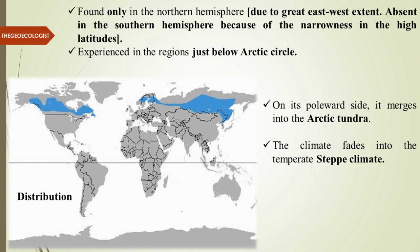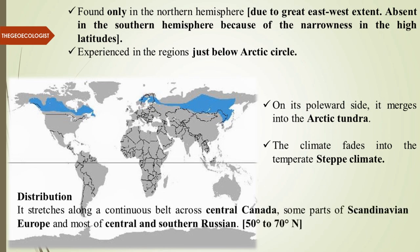Coming southward, the climate fades into temperate steppe climate, which is the grassland area. So the Taiga belt is an in-between belt of tundra and temperate grasslands. It stretches along a continuous belt across central Canada, parts of Scandinavian Europe, and most of central and southern Russia — that is 50 to 70 degrees north, very close to the Arctic Circle on one end and to the temperate steppe on the other.